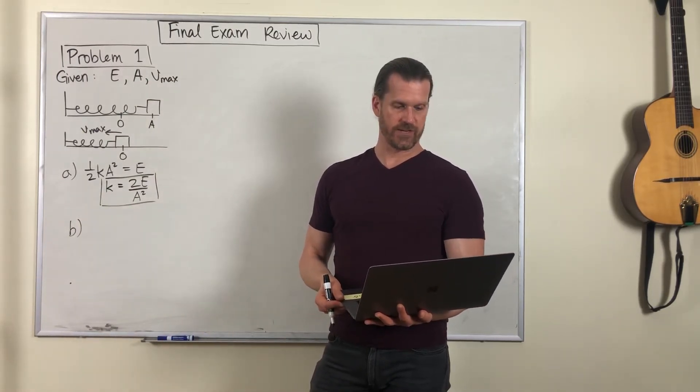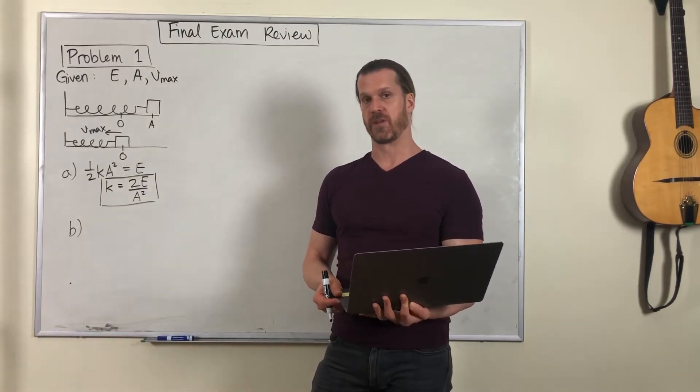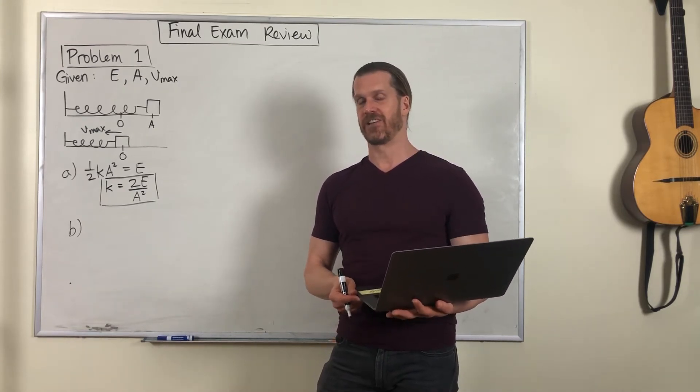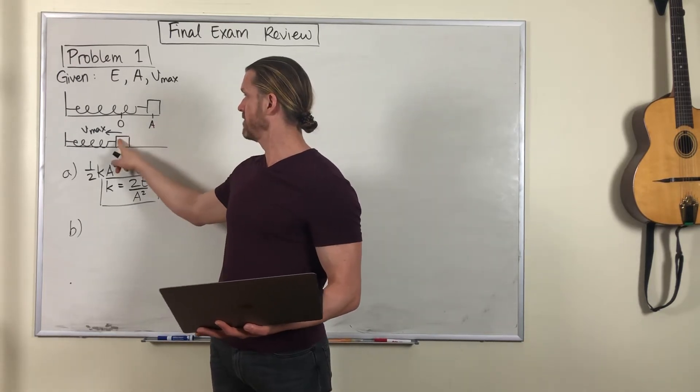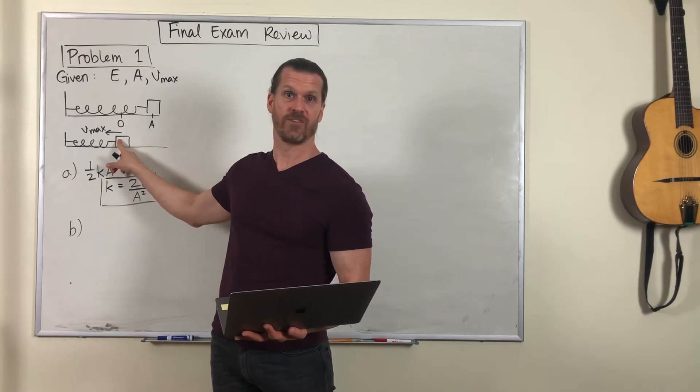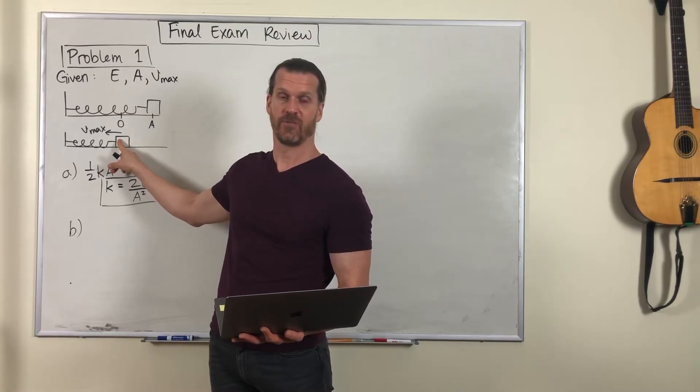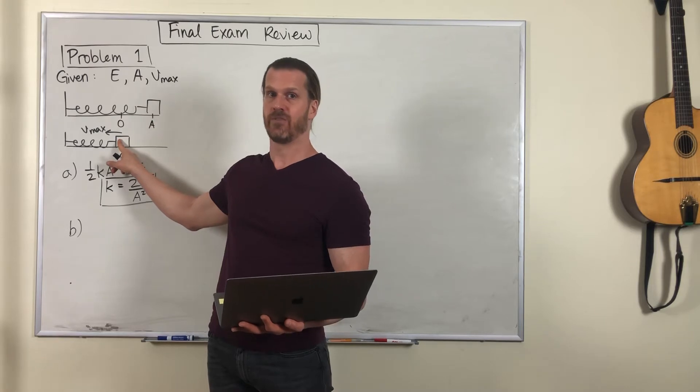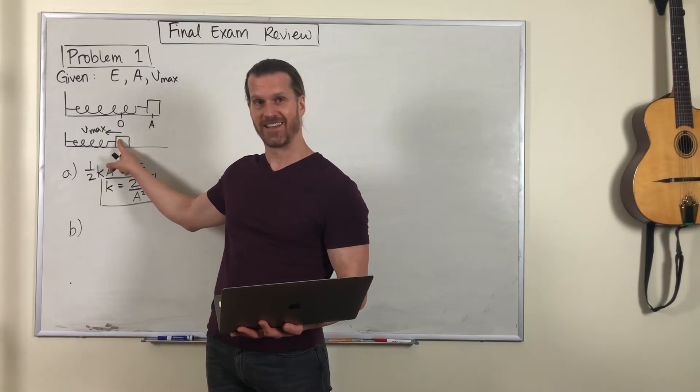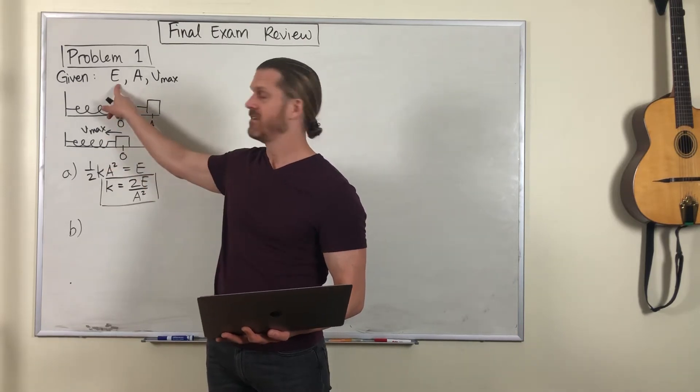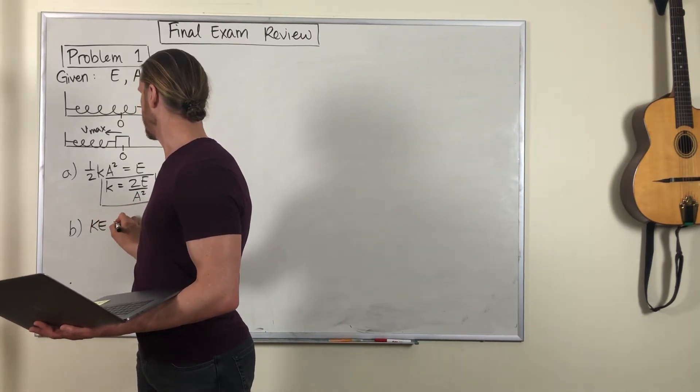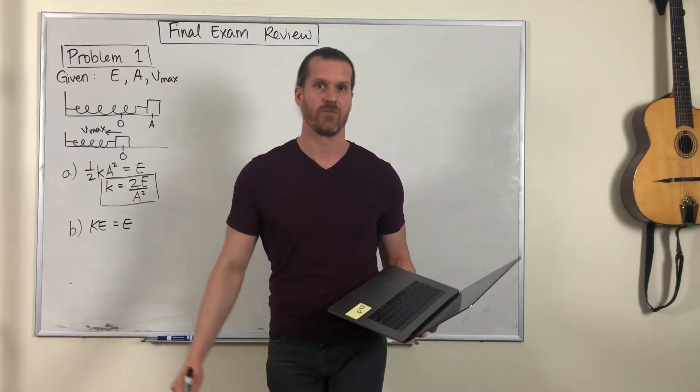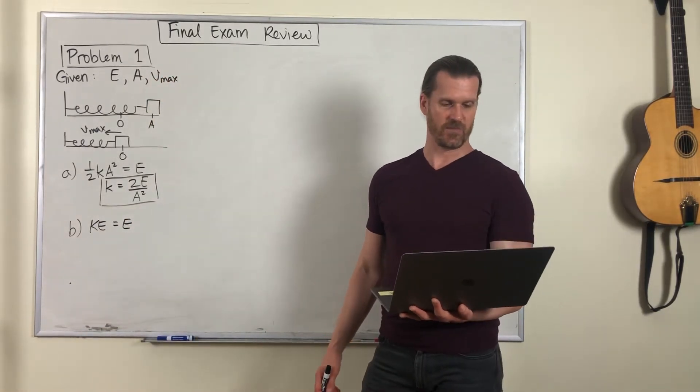Question B. What's the kinetic energy of the system at the equilibrium point? You can do this without any calculation at all, just a little common sense. When the system passes through the equilibrium point, the spring is not stretched or compressed, so there's no potential energy. All of the energy is kinetic. Since energy is conserved, that means the kinetic energy at equilibrium equals that total energy.